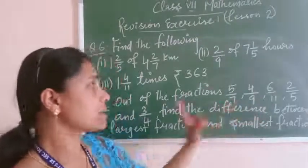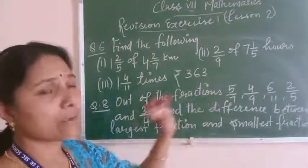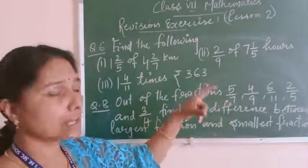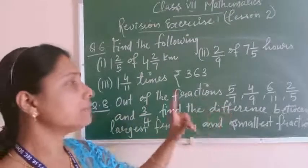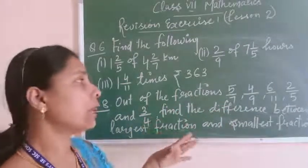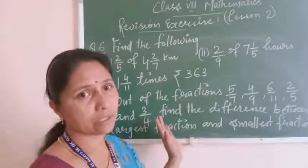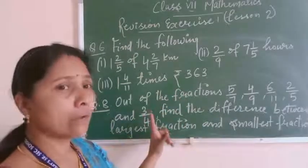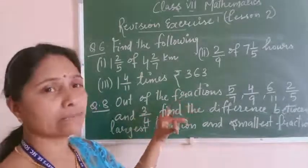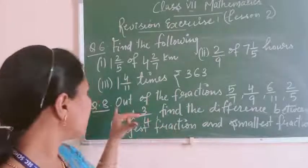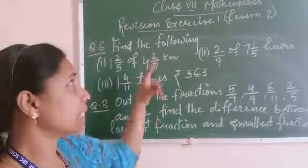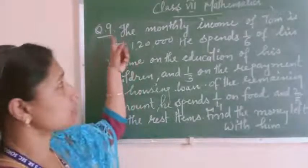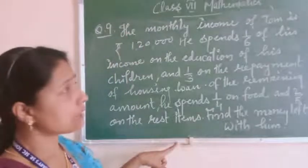Here, 6 fractions are given, and these 6 fractions are unlike fractions. So first of all, you have to convert these unlike fractions into like fractions, then find the smallest and largest, and then find the difference between them. And if you have any doubt, please note it down and doubts will be clarified in class later. After question 8, one more question is there — that is question number 9, the last question, which I am writing now.